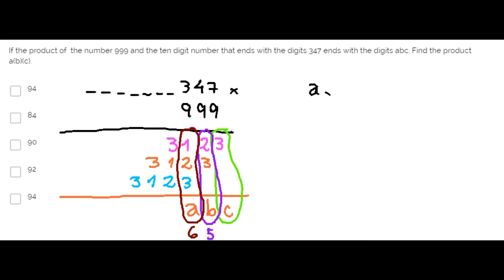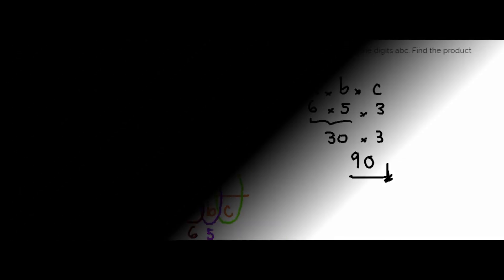Finally, the product of A times B times C is 6 times 5 times 3, you have 30 times 3, 9. Choice C is correct.